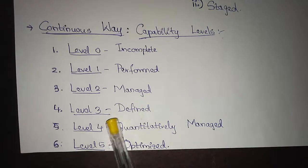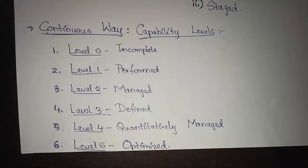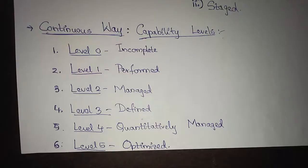Level 3 is Defined — all Level 2 criteria are satisfied and the process area is tailored from the organization's set of standard processes according to its tailoring guidelines. Level 4 is Quantitatively Managed — all Level 3 criteria are satisfied and the process area is controlled using measurement and quantitative assessment. Level 5 is Optimized — all Level 4 criteria are satisfied and the process area is adopted and optimized using quantitative means to meet changing customer needs.